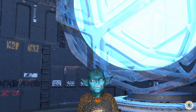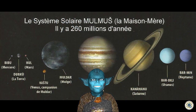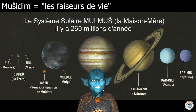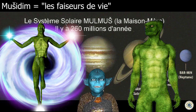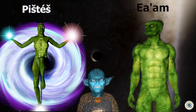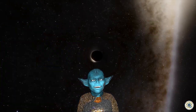Cette machine prend sa source il y a des centaines de millions d'années sur notre planète, du temps où elle s'appelait Dupku et du temps où elle était occupée par une race d'êtres très puissants nommés les faiseurs de vie, ou Musidim. Ces Musidim, de physionomie reptilienne, avaient deux souverains mythiques qui se nommaient Pistesse et Eam, qui décidèrent de voyager à travers le temps et l'espace pour percer le mystère du contre-courant en provenance du centre galactique, mais aussi pour démêler l'énigme des ennemis King Alam.